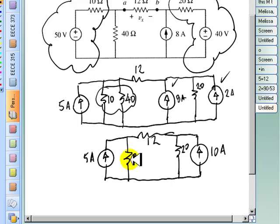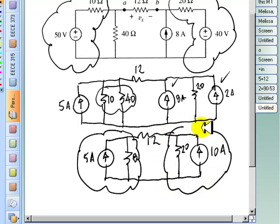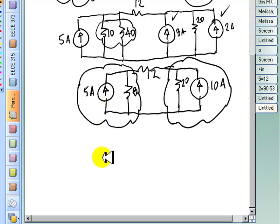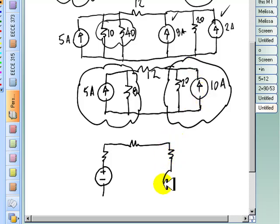We can convert now this Norton branch into a Thevenin branch, and this Norton branch into a Thevenin branch. The direction of the current determines the polarity of the voltage source in the Thevenin branch. In the Norton branch, the current goes to the top, so the Thevenin branch, the voltage is like that. The 12 ohm resistor. And this Norton branch becomes another Thevenin branch. The polarity of the voltage source is given by the direction of the current in the Norton. This is our circuit.